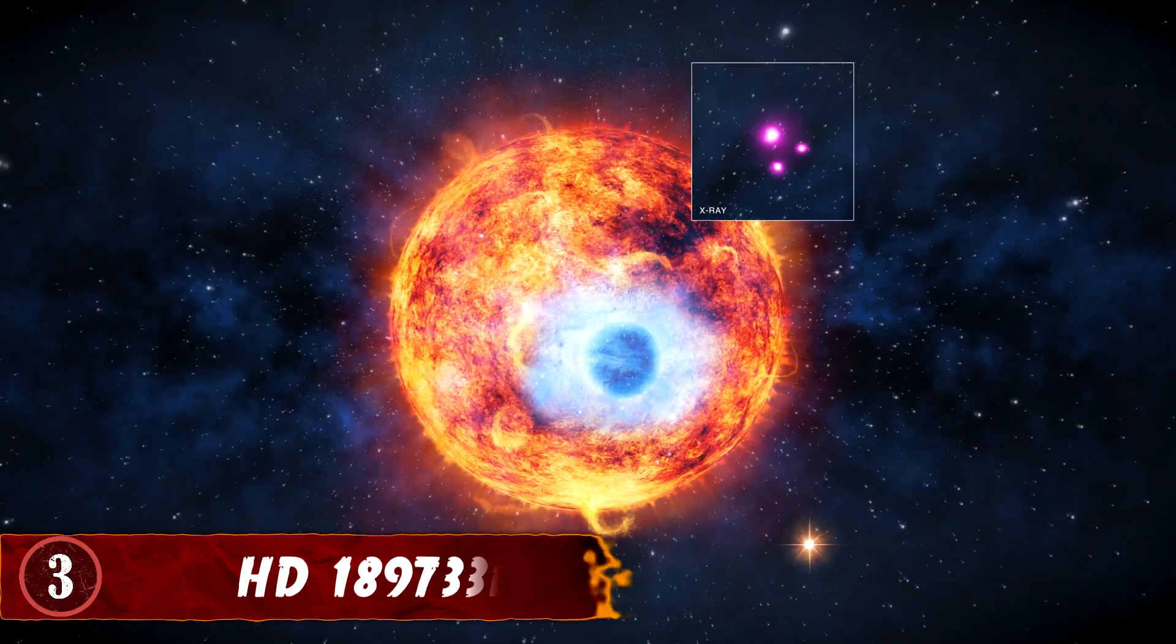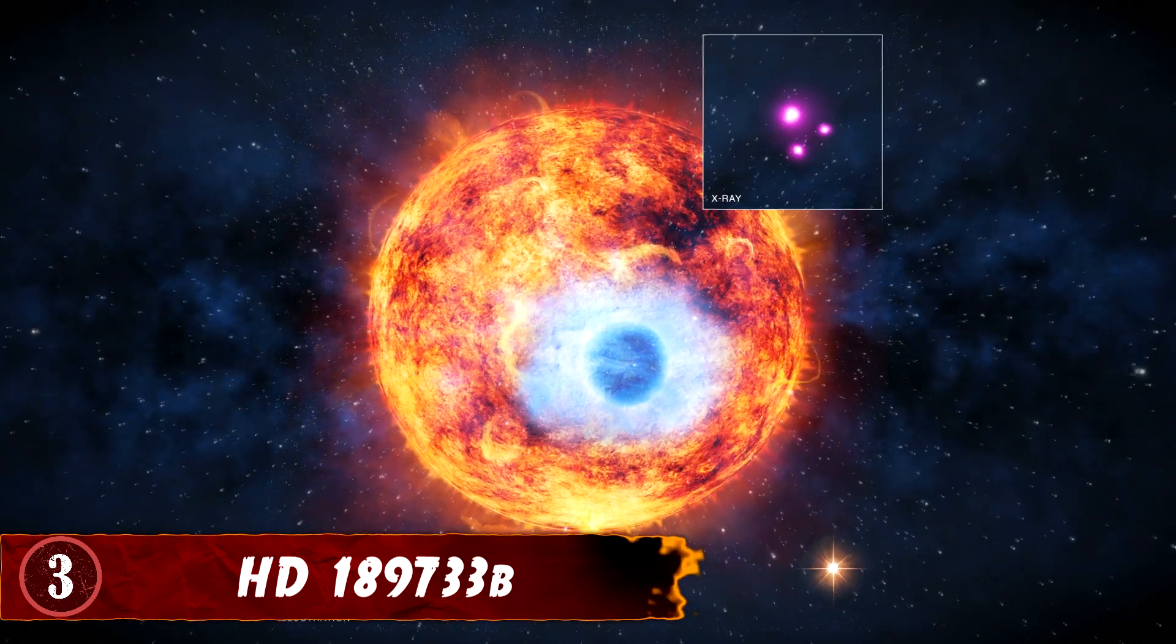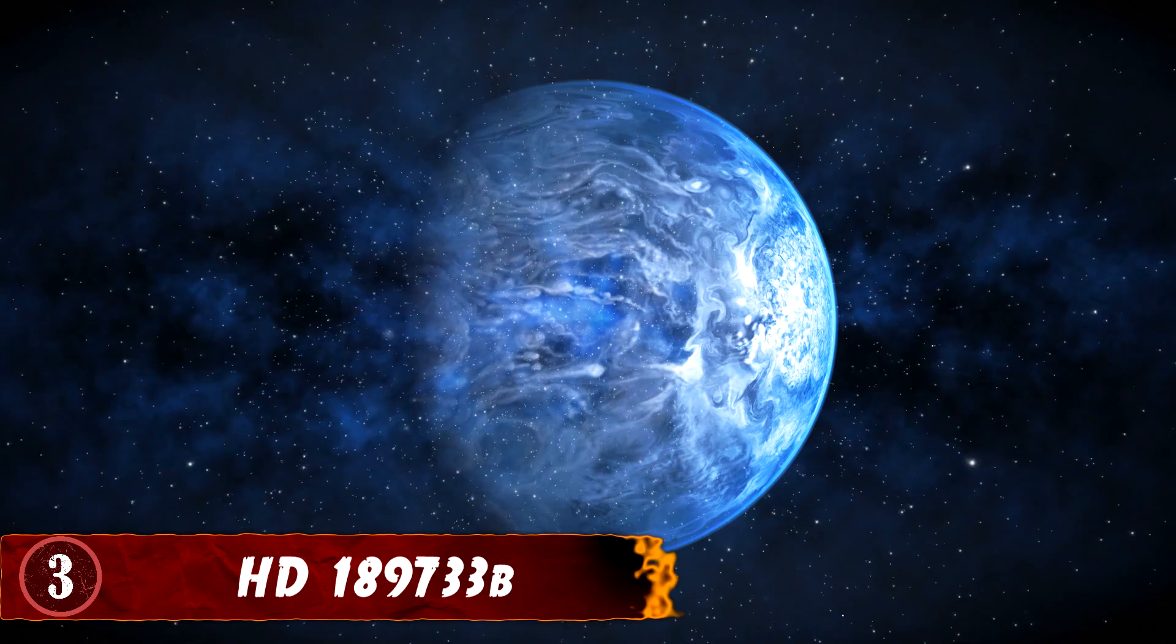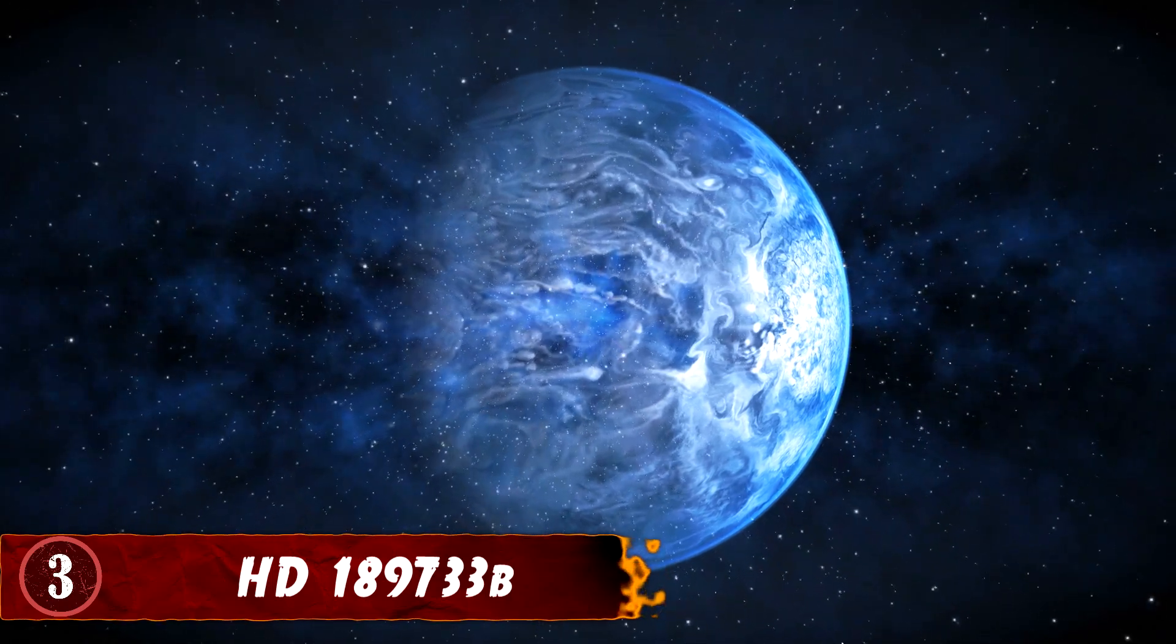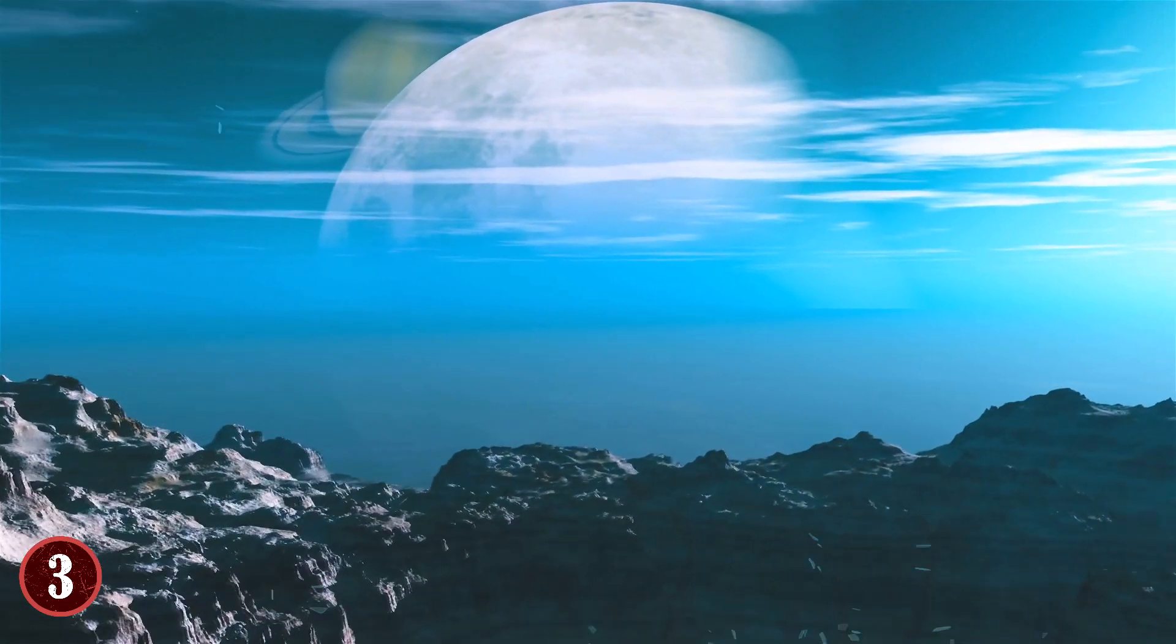Number 3: HD 189733b. HD 189733b is one of the strangest planets in existence, and features a feat that no one likely thought possible, or really even desired. You see, this is a planet that rains glass. Sideways.